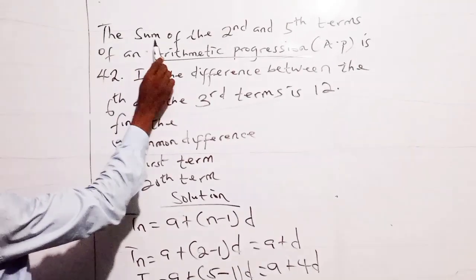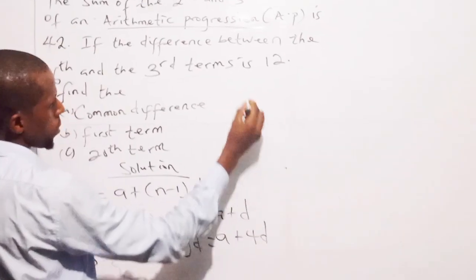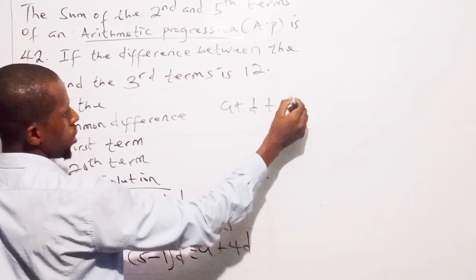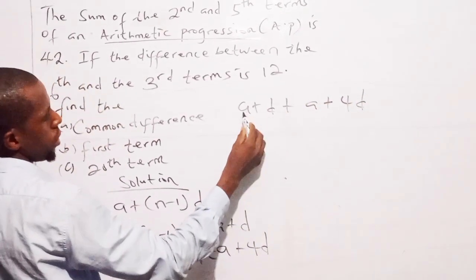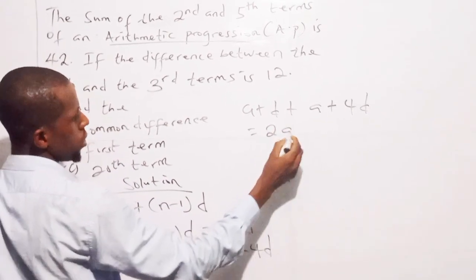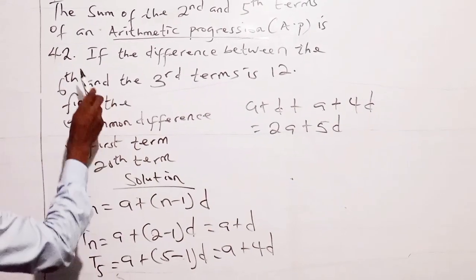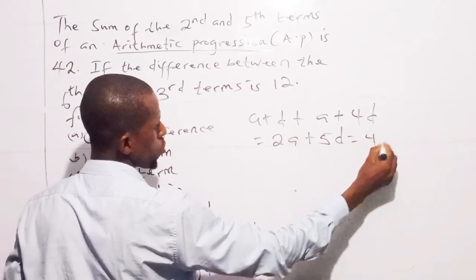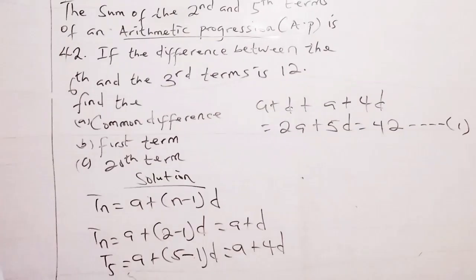But the description says, I should look for the sum. So meaning, I should add up. So when I'm adding up this, I'm having A plus D plus A plus 4D. So A plus A is 2A, D plus 4D is 5D. So the description says, is 42. So I have to say, equals to 42. I can call this my equation 1.